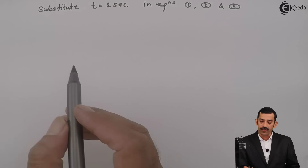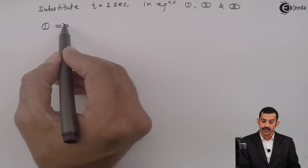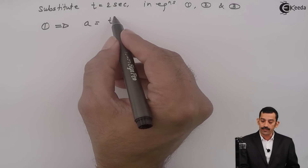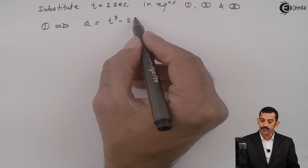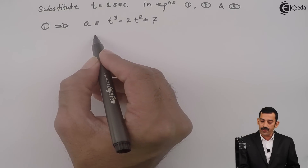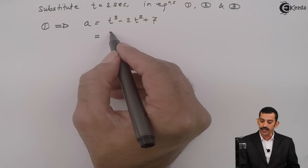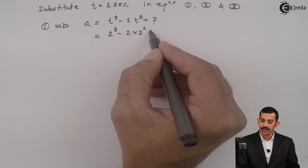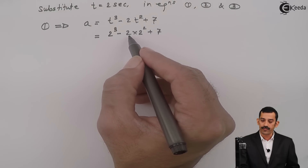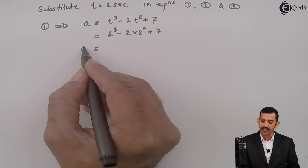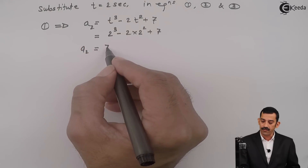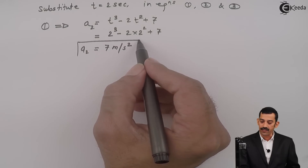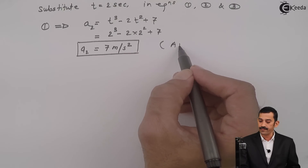Substituting into Equation 1 — the equation of acceleration: A = t³ - 2t² + 7. Putting t = 2: A = 2³ - 2(2²) + 7 = 8 - 8 + 7. The 2³ terms cancel. Therefore, acceleration at t = 2 seconds is 7 meters per second squared. This is the first answer.